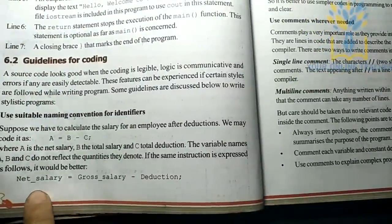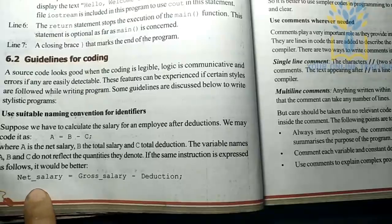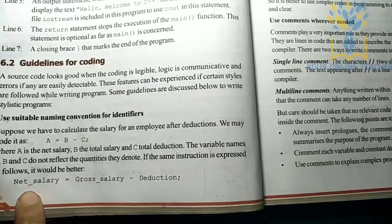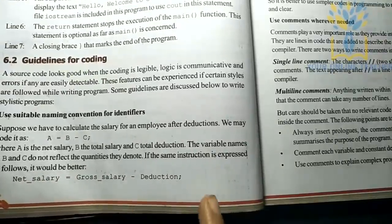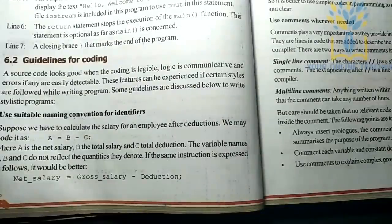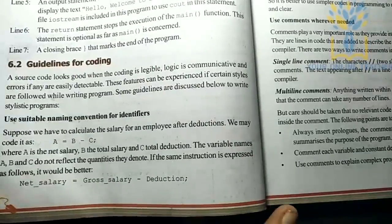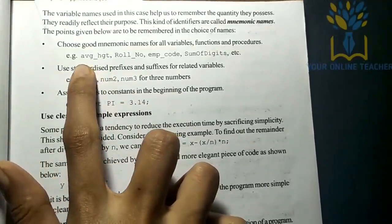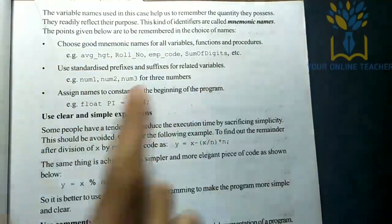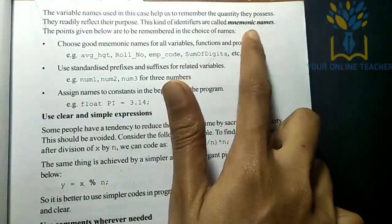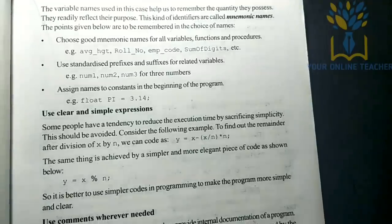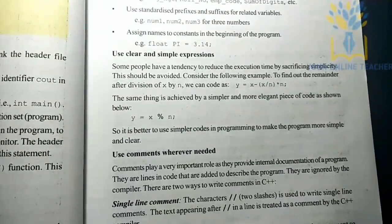For example: net_salary equals gross_salary minus deduction. We call variables like average height or roll number mnemonic names. A full name can be shortened to a short form — that is suitable naming convention.